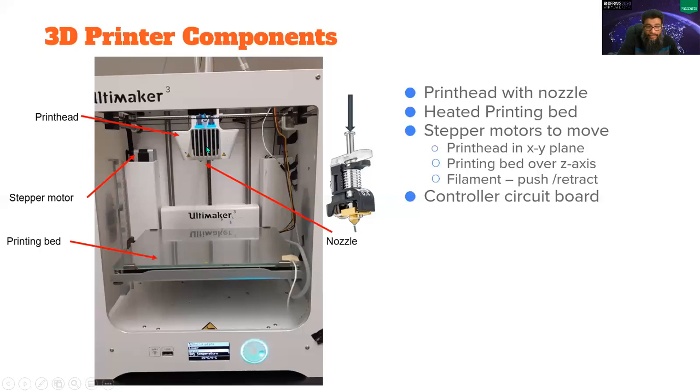The print head can move in X and Y direction through stepper motors and you can see these are the stepper motors. So if you see the freedom of movement axis, we have like X axis, Y axis, the Z axis, the printing bed and the filament that can be pushed or retracted.